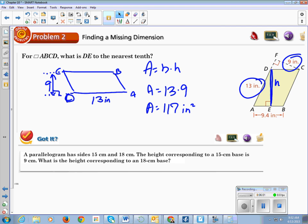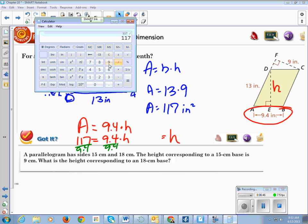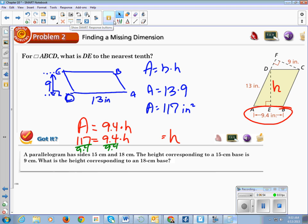So now I'm going to take the same figure. And I'm only going to look at 9.4 as my base and H as my height. Because area should be base times height. And we know that our area is 117. So in order to find our height, we just divide 117 by 9.4. And we get that our height is equal to 12.4, and that's inches.